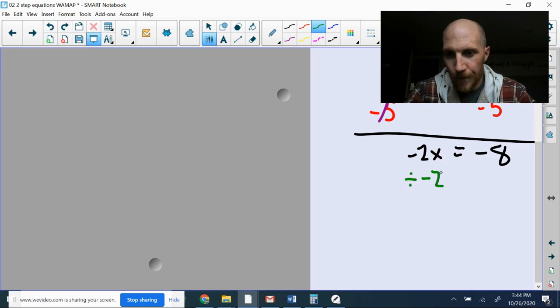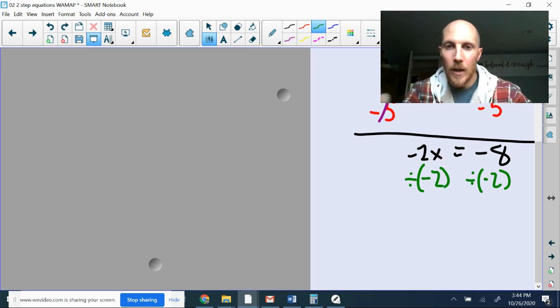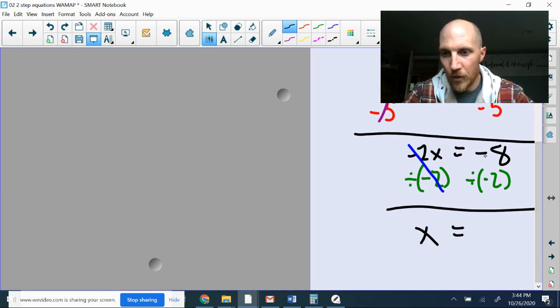So I'm going to divide by negative 2. Whoops. Where did my divide go? There's my divide. And then multiplying by positive, by negative 2, dividing by negative 2. Those are going to cancel. So I'll have just the x left on the left side. Equal sign comes straight down. Negative 8 divided by negative 2 is going to be positive 4.